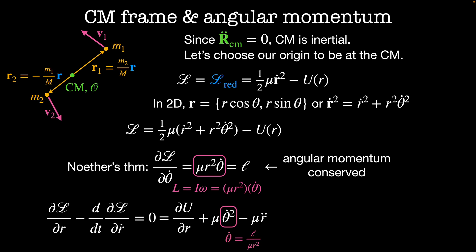I can make this simpler by using the definition of angular momentum to remove the θ dot term. And I get dU by dr plus L squared over μ r cubed minus μ r double dot is equal to zero. So our original six-dimensional system is now entirely determined by this one equation for the variable r.